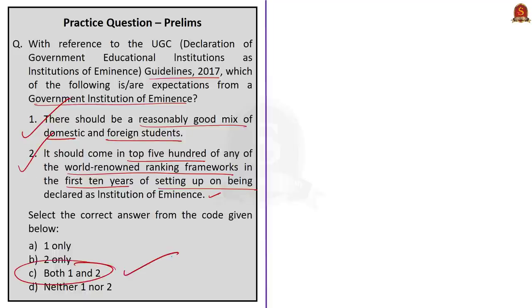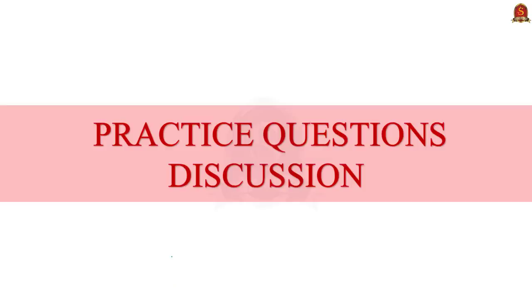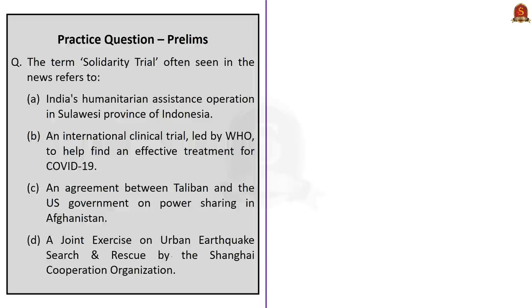With this, we have covered all the news articles taken up for today's discussion. Now we move on to the practice questions discussion based on today's news analysis. Question 1: the term Solidarity Trial, often seen in news, refers to — the correct answer is option B, an international clinical trial led by WHO to help find an effective treatment for COVID-19.